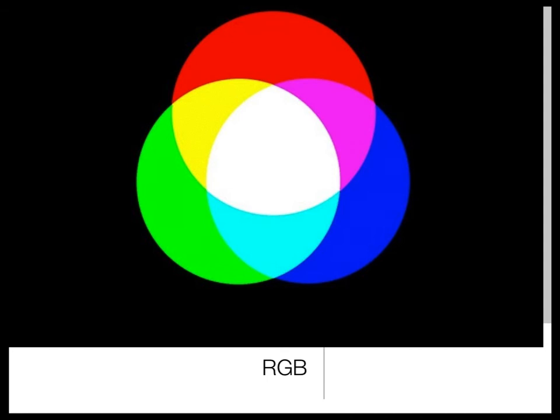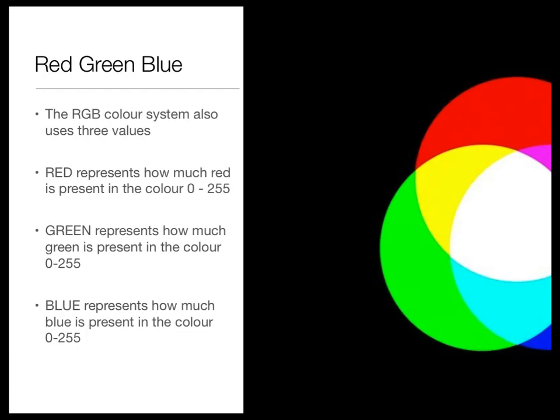In the RGB system we have three variables: a red value, a green value, and a blue value. Each of these ranges from 0 to 255. Why? Because 0 to 255 is 256 possible values — that's one byte, so it's handy. People figured 0 to 127 didn't give enough precision or variety in colors. So we have one value representing redness, one for greenness, and one for blueness.